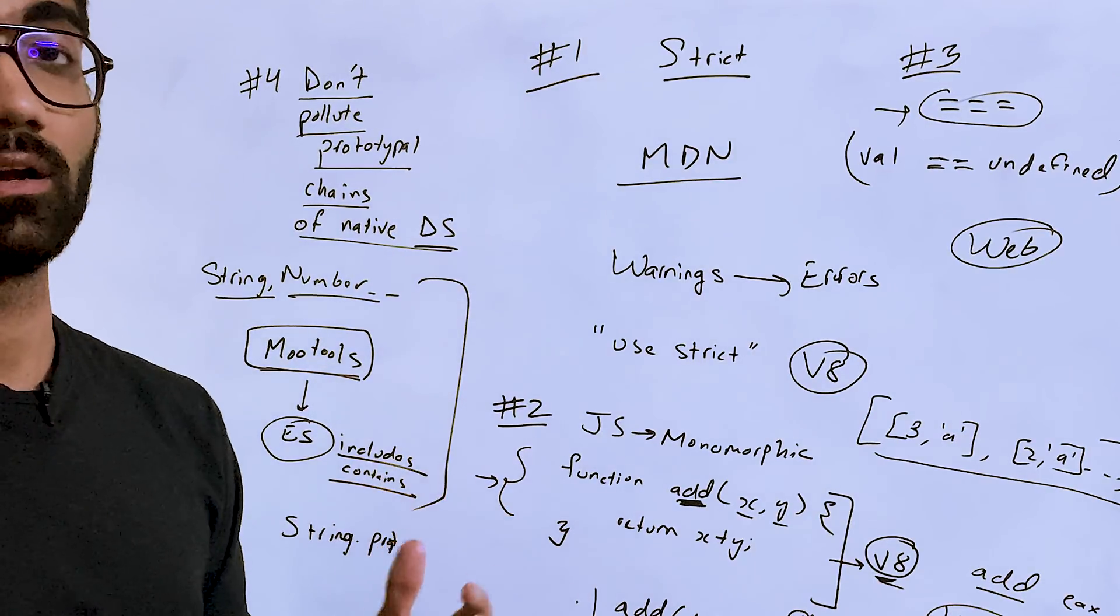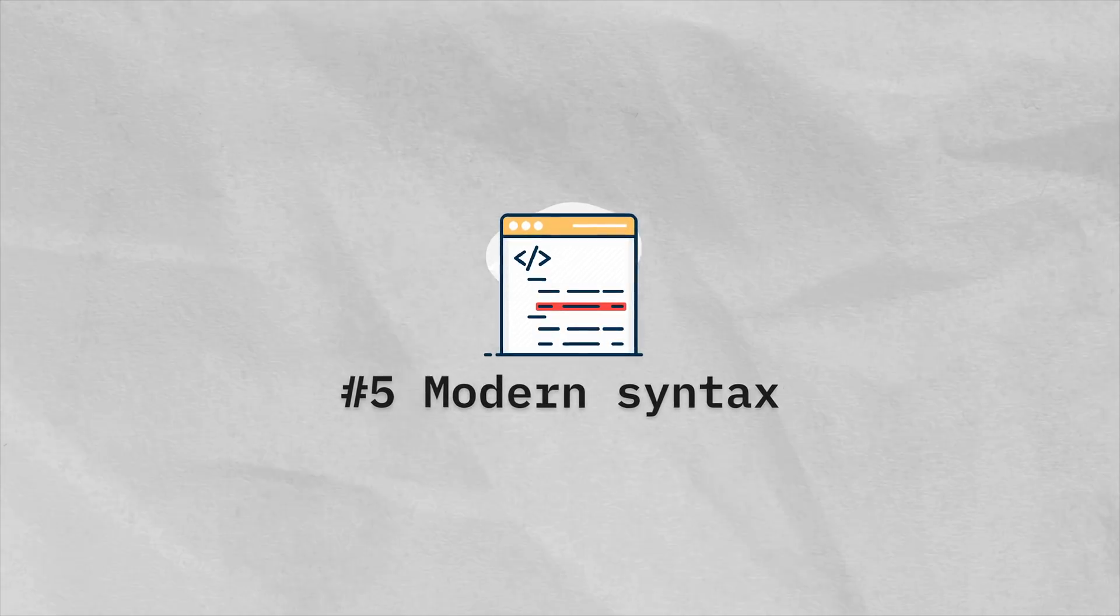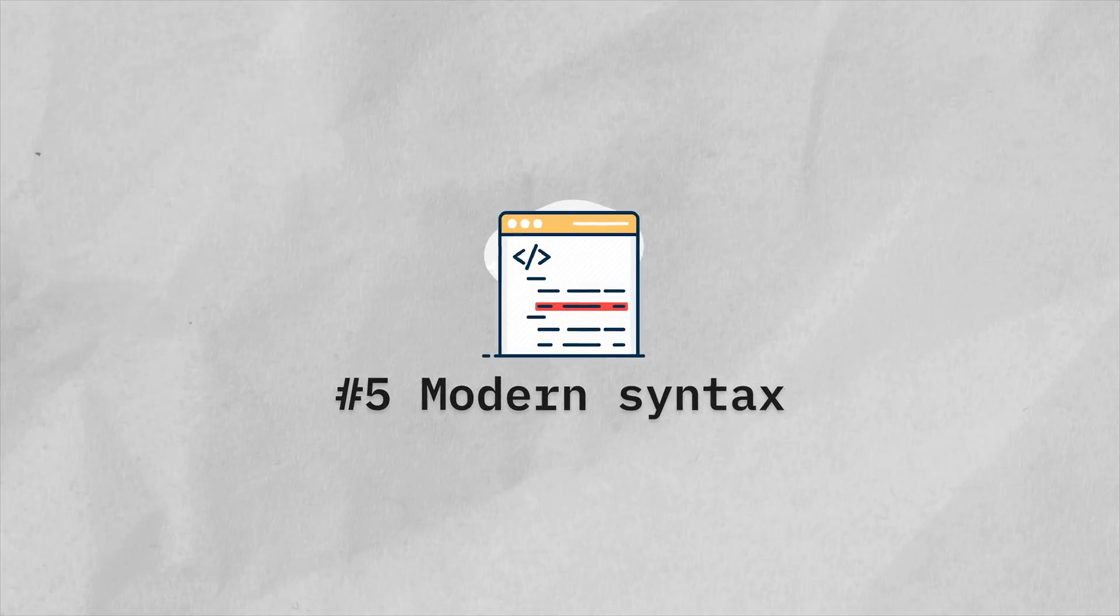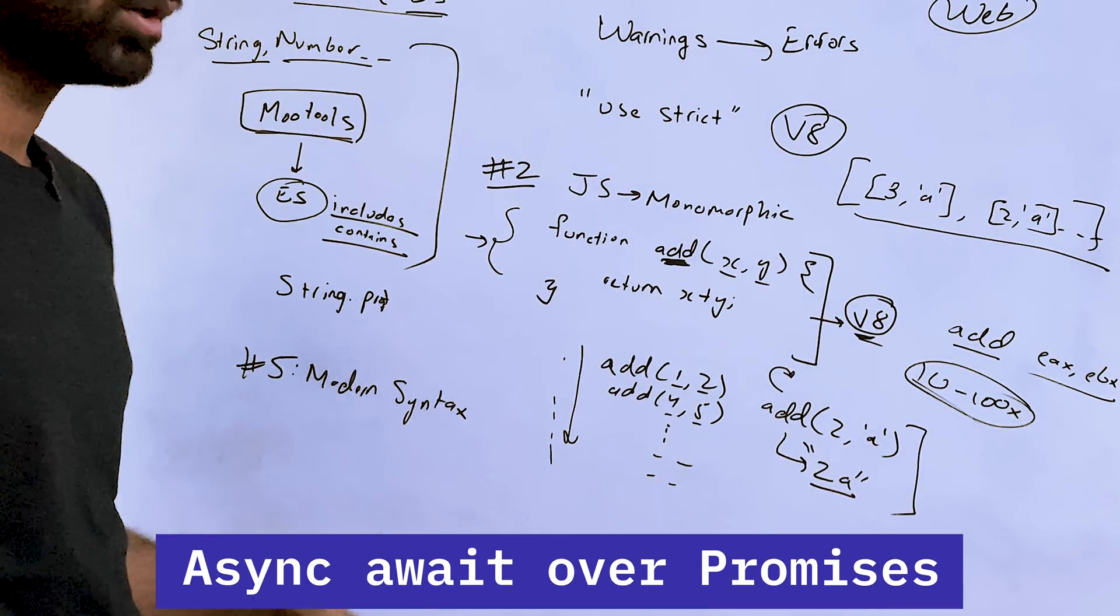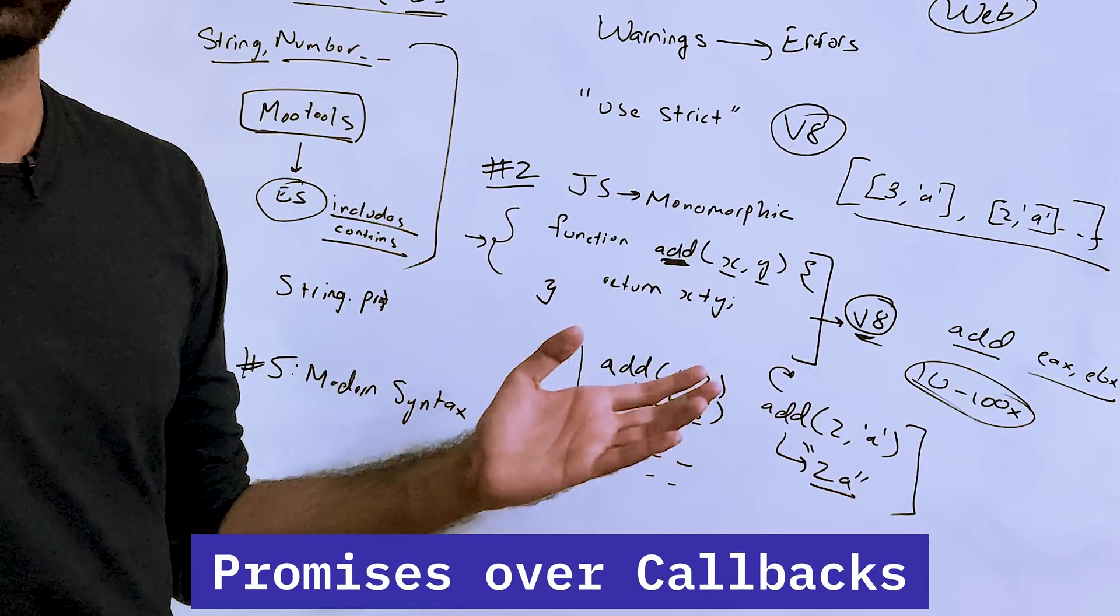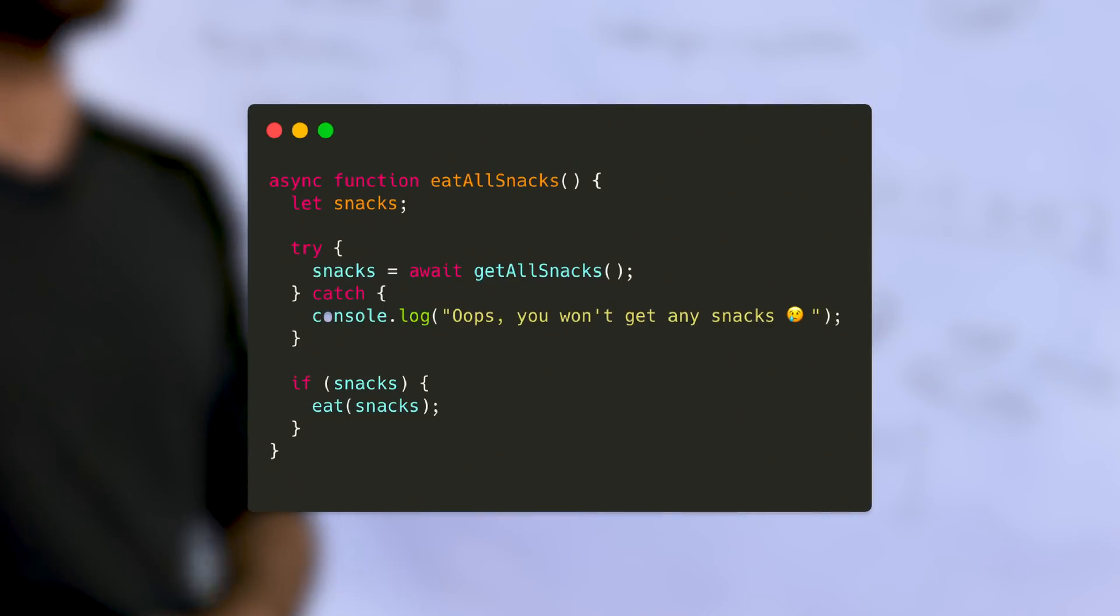My fifth and final tip is always try to use modern syntax over the primitive one. The best example for this is async/await over promises, promises over callbacks. Basically, callbacks was the first thing in JavaScript. When you use modern syntax, not only do you make your code read and feel much simpler.